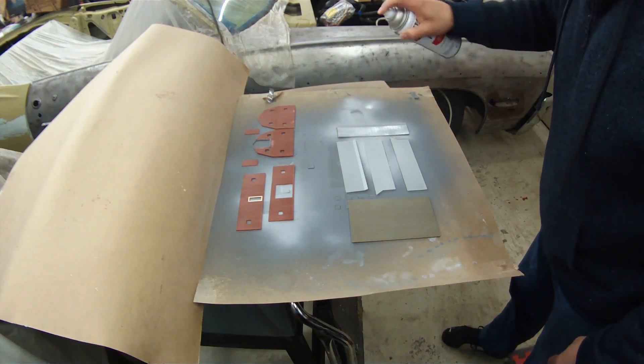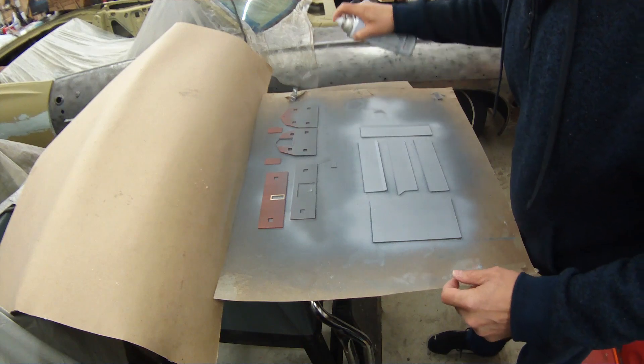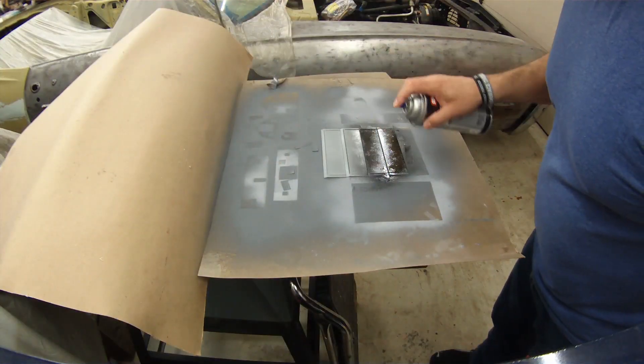Priming the parts was next. Light gray for the roof parts, dark gray for the walls, and flat black on the interior of the roof.